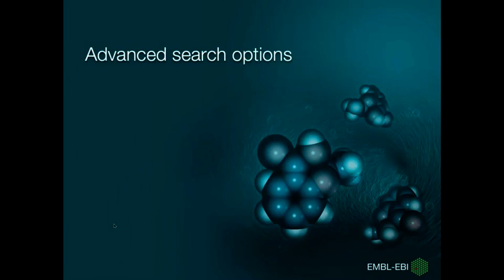You might need more advanced search options if you are doing a comprehensive literature research, for example for a review or thesis, or when starting in a completely different field. The advanced search page has several different tools available to allow you to do a very precise search. It provides a number of official parameters.